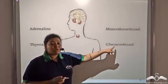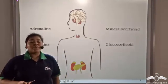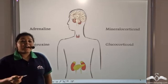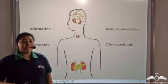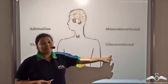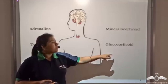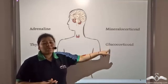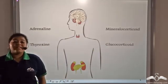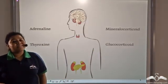The glucocorticoid, which is another cortical hormone secreted by the adrenal cortex, helps in glucose metabolism. It helps in the conversion of glucose from proteins and fats when the glucose reserve in the body is diminished.